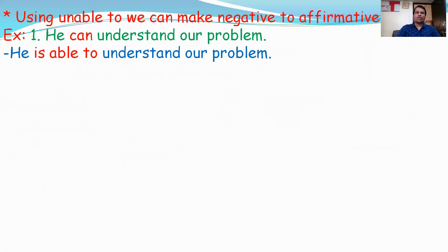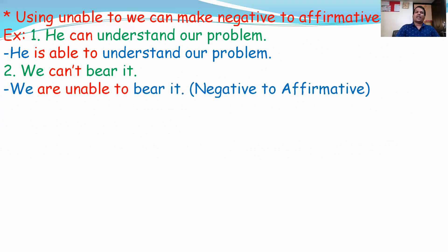Second question: We can't bear it. Can't is negative and present tense, so we use am/is/are and unable to. For 'we,' we use 'are.' The answer is: We are unable to bear it. Look at this sentence - the negative becomes affirmative.